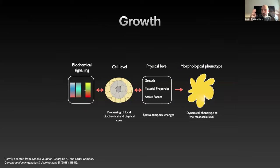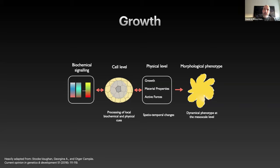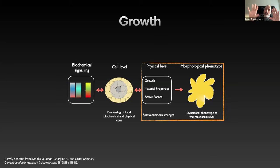A modern view on growth — jumping several centuries — we can think about the following diagram. There is a change at the biochemical level, which you get from the cell. Then there is a change at the physical level — this could be growth, material properties, or active forces — which introduces spatial and temporal changes. At the end of the day, you get some morphological phenotype, which could be a limb or something else. In this talk, I'm going to focus on changes at the physical level and see what kinds of morphological phenotypes I can get.